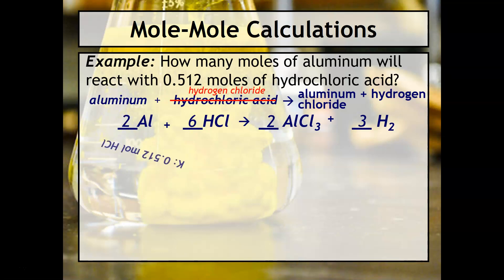Next up, let's write our known and our unknown. And as I mentioned, a really helpful strategy is circling those substances that are in the known and the unknown. So I'm going to circle the aluminum and the hydrochloric acid because that is what the mole ratio is going to be between. And I know that because the known and the unknown have these units of aluminum and hydrochloric acid. So that's why I circled those two.